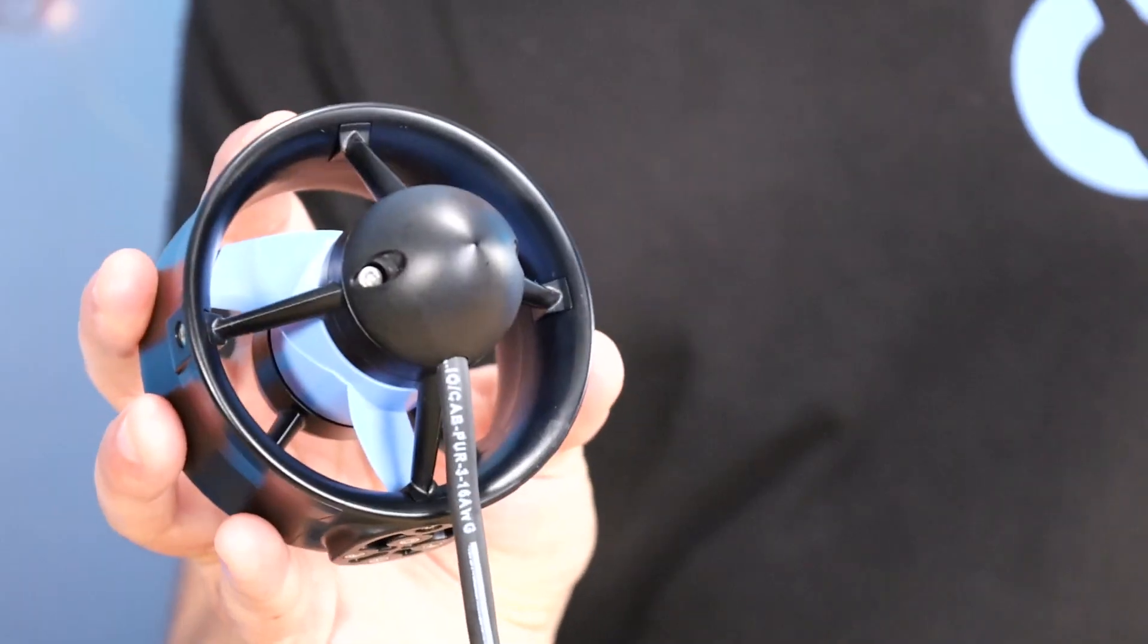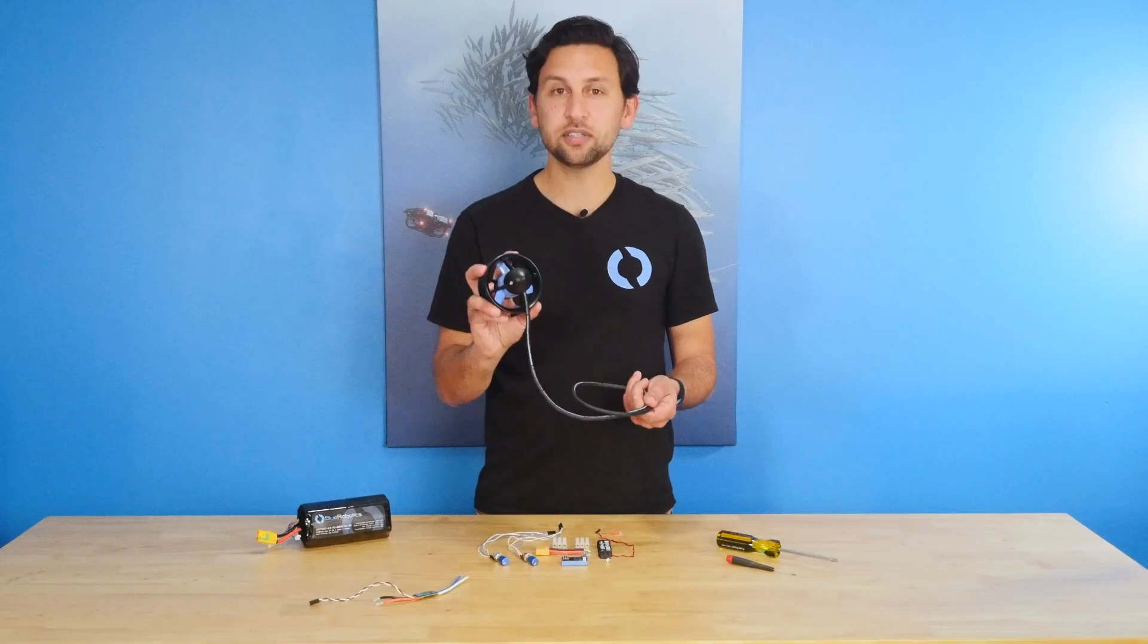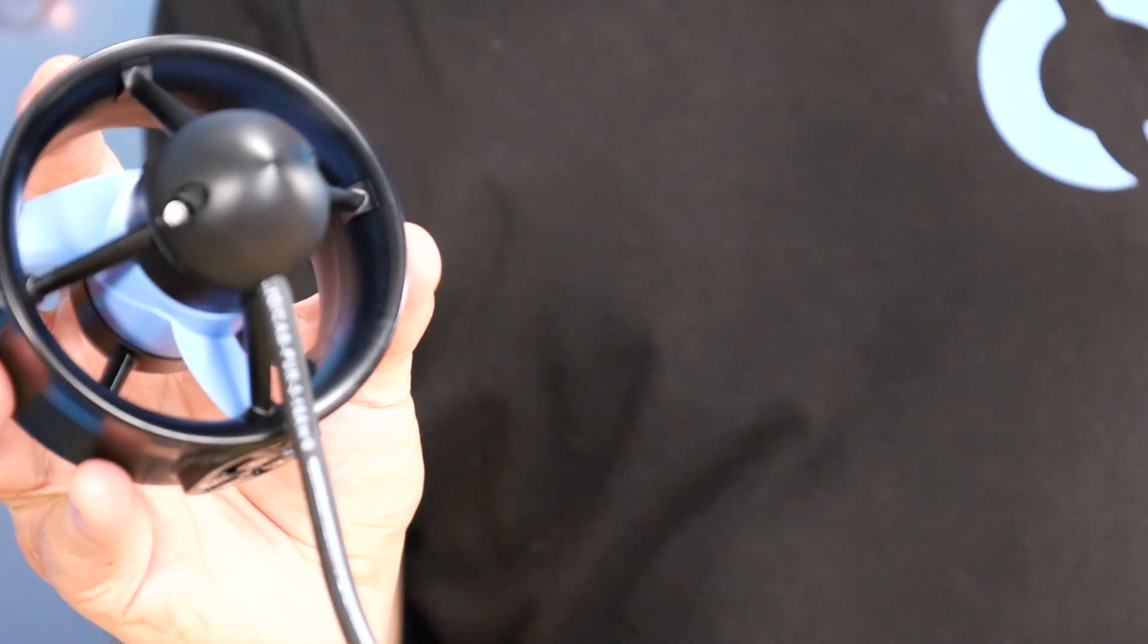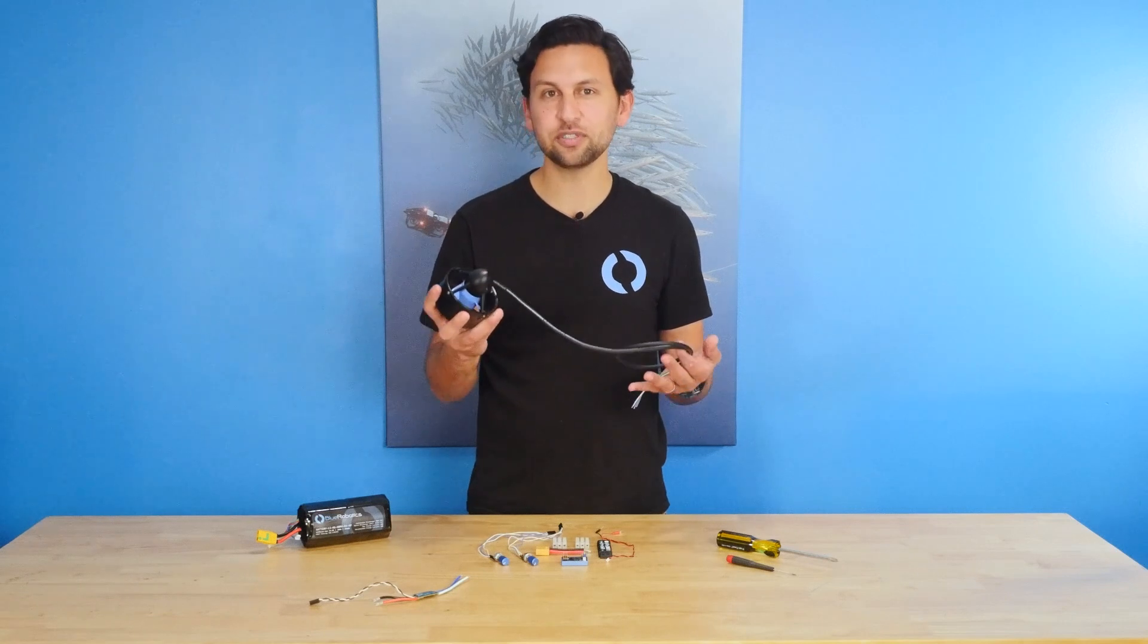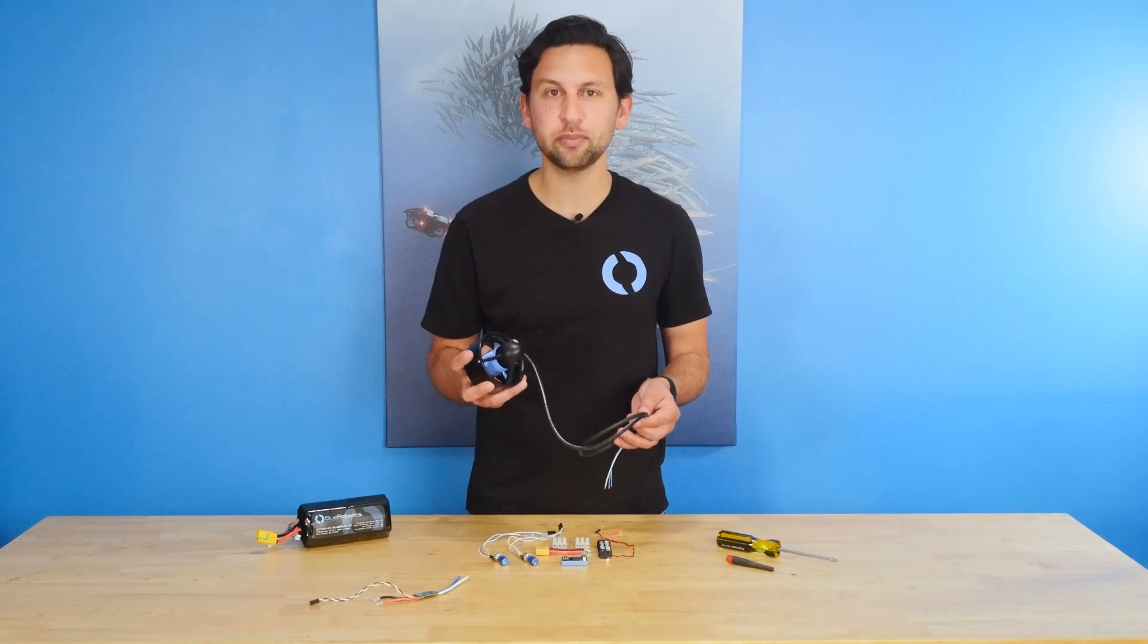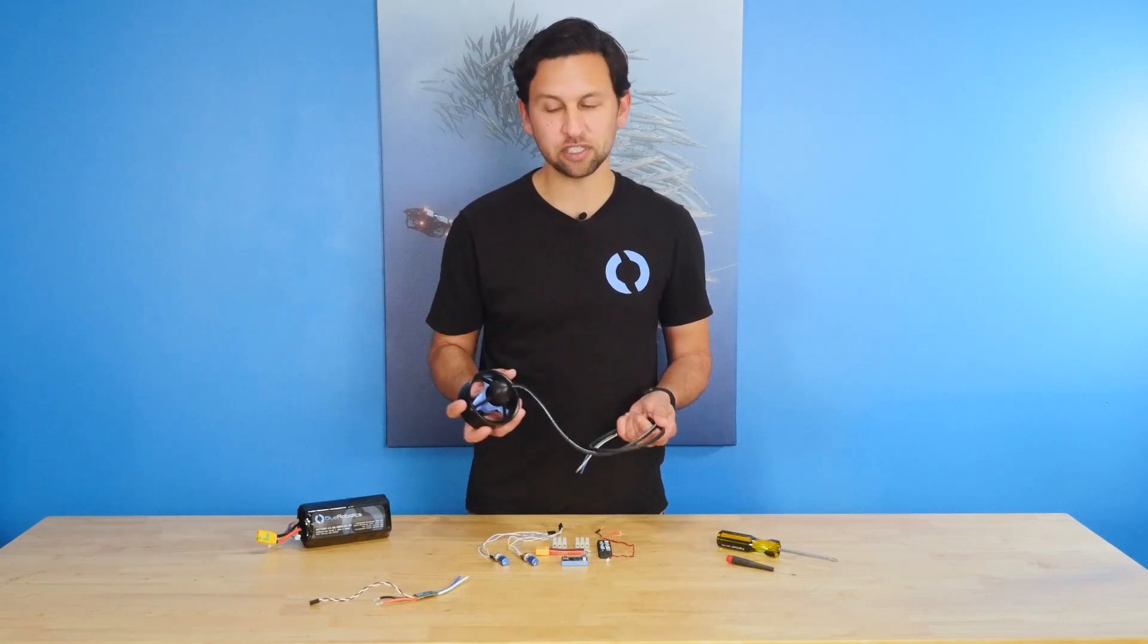Today we're going to be using it to control the T200 thruster. The T200 is a three-phase brushless motor, which means that unlike a lot of motors, you can't just connect it to power and expect it to spin. It needs an electronic speed controller to work.